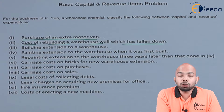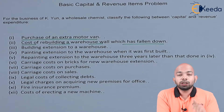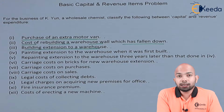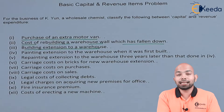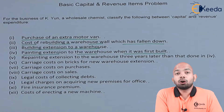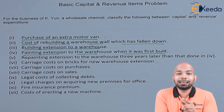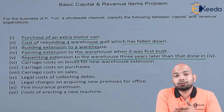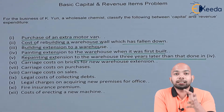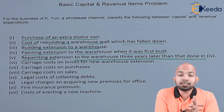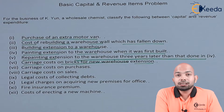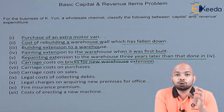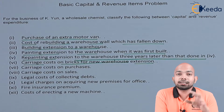Second is the cost of rebuilding a warehouse wall which had fallen down — you need to figure out whether the cost incurred is regular or one-time. Third is building an extension to the warehouse, meaning you expand the existing warehouse. Fourth is painting the extension of the warehouse when it was first built. Fifth is repainting that same extension after three years. Sixth is the carriage cost incurred on the new bricks used for the extension building.